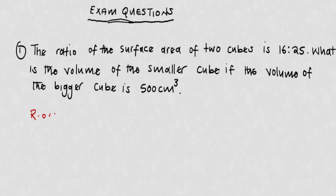The ratio of area is equal to 16 to 25. Now when you have a ratio of anything, you should go back to the origin, and the origin is the ratio of heights. If the ratio of areas is 16 to 25, go back first to find the ratio of heights. To find the ratio of heights from area, just square root.